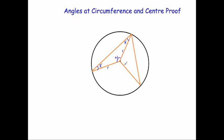Now let's look at the other triangle. This line is the radius from the centre to the circumference, and this line here is also the radius, so let's mark it R. That means this angle and this angle are the same size, so let's mark them both as Y. And let's mark this remaining angle as Z.